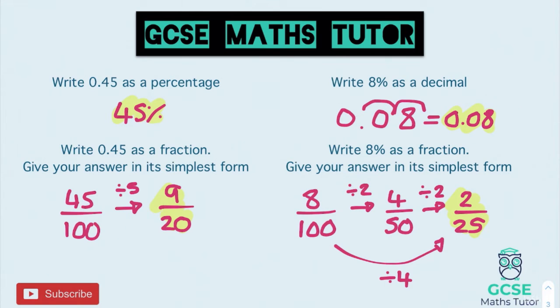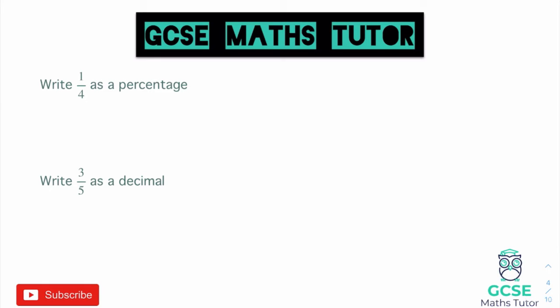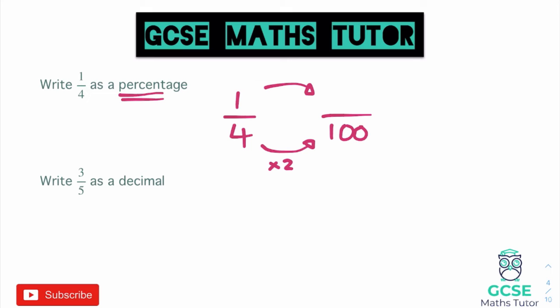Now let's look at converting a fraction. For 1 over 4 written as a percentage — remembering that percent means per 100 — we want the denominator to be out of 100. We need to think: what do we multiply 4 by to get 100? That number is 25. Whatever we do to the bottom we do to the top, so 1 times 25 gives us 25. It's now 25 per 100, so that equals 25 percent.